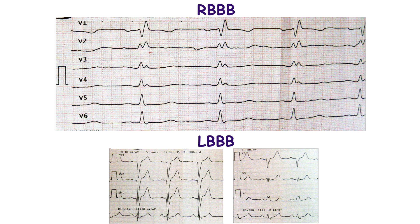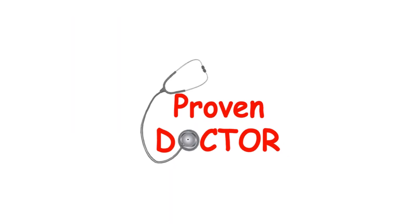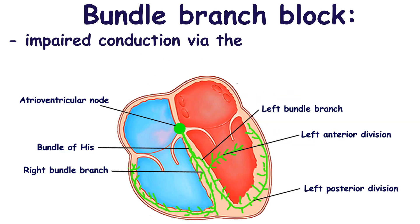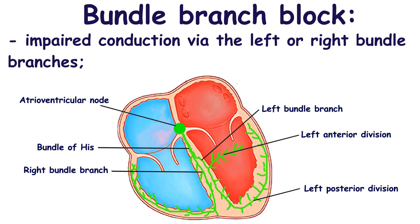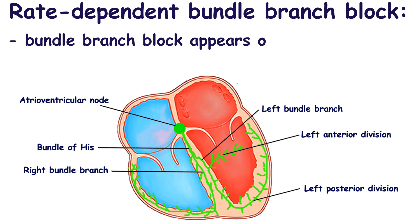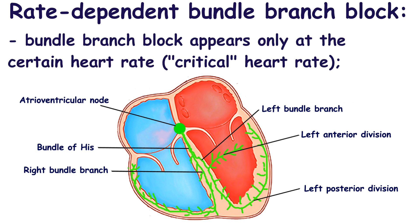Usually, left or right bundle branch block pattern is persistent on ECG. But there are cases when bundle branch block occurs only at higher heart rate. Bundle branch block is characterized by impaired conduction via the left or right bundle branch. Rate dependent bundle branch block is characterized by appearance only at a certain heart rate, and it disappears at heart rate below this value, also known as critical heart rate.